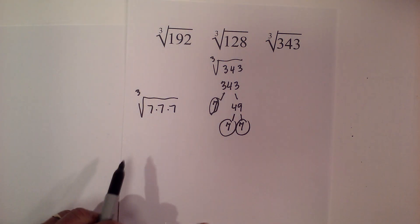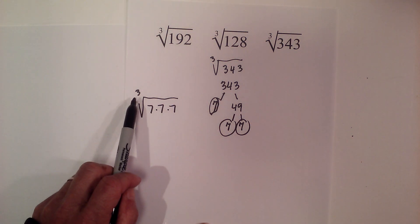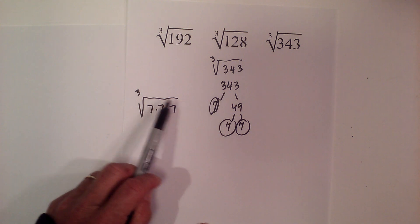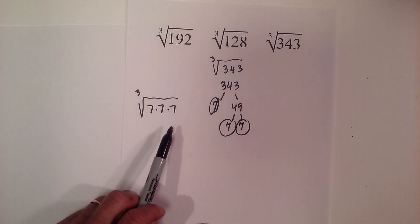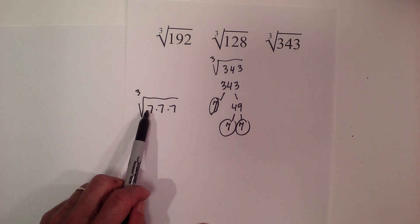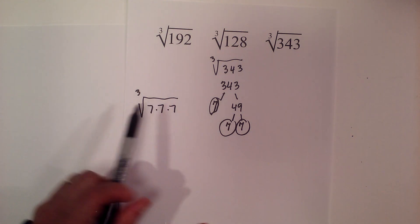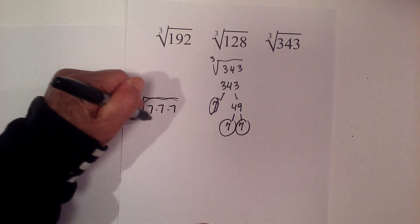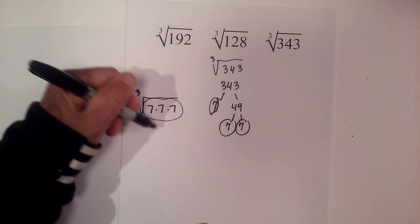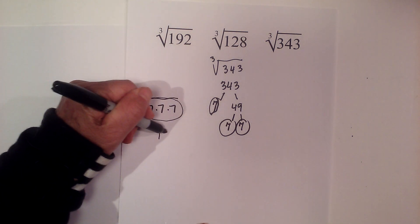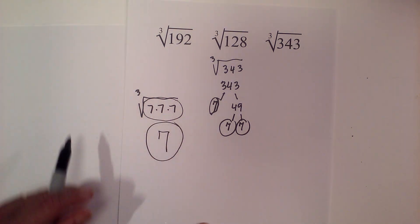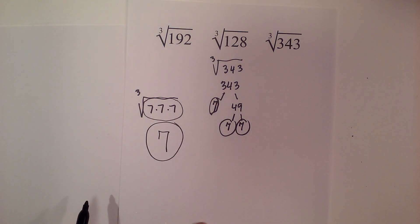Now the rule is, if you have a triplet — since it is a cube root — you can pull it out from under the radical sign, but you only pull one 7 out. So since we have a cube, we have a triplet, it becomes 7. So the cube root of 343 is 7.